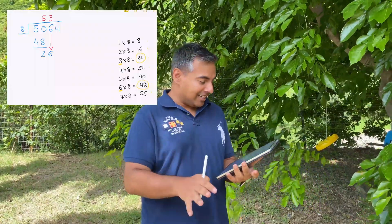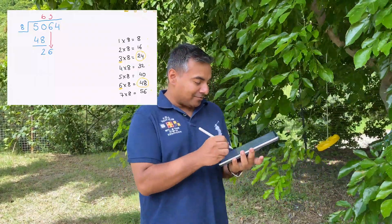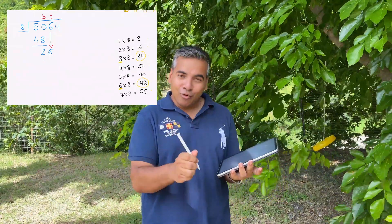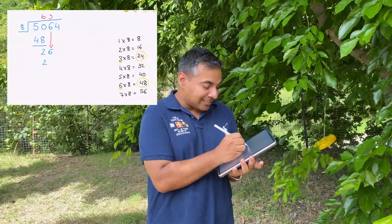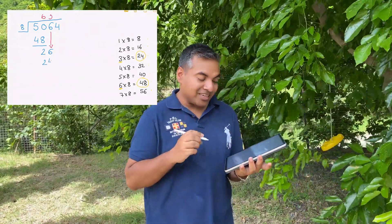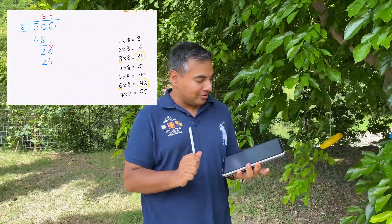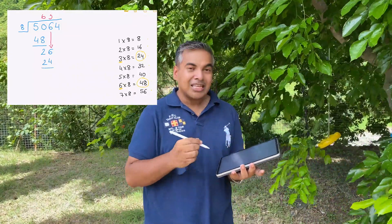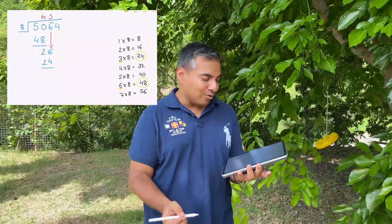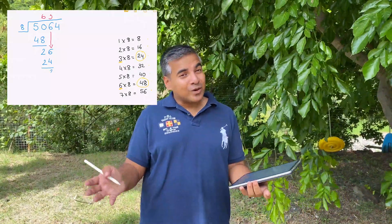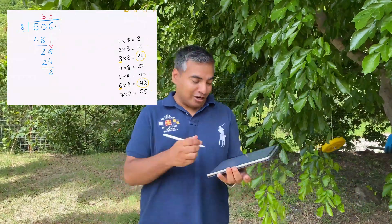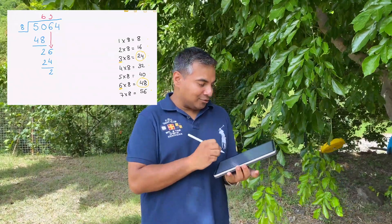We're now on step number six, which is a repeat of step three. We put twenty-four underneath twenty-six — because that was the closest multiple — and then calculate the difference between twenty-six and twenty-four, which is two. So we write two underneath.